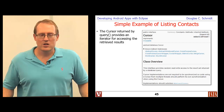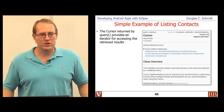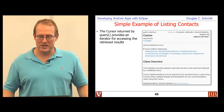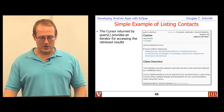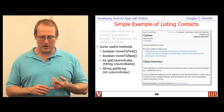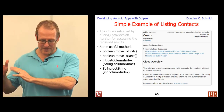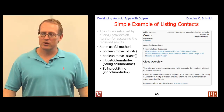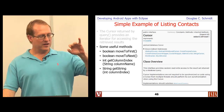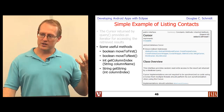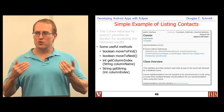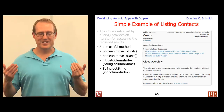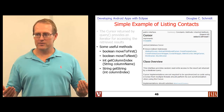A cursor is essentially an iterator — it gives you iterator-like operations. You can move the cursor to the beginning, step through one at a time using moveToNext, get the index of a particular column name, and get the string value stored there. This gives you read-only access to the data returned from the underlying content provider, which populates the cursor as part of the query method.